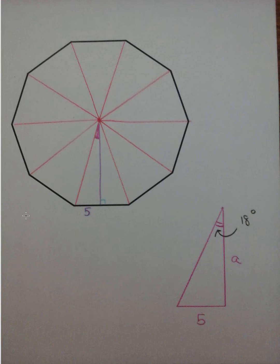Step number three, take one of the triangles and draw an altitude. Find the degree measure by first taking 360 divided by 10, which is 36, and then cut this in half. So the angle measure here is 18 degrees.